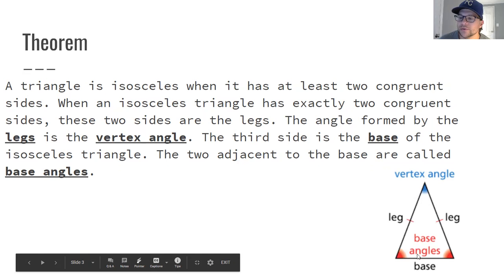And then the two angles that are touching the base are called the base angles. So you have two legs and a vertex angle, two base angles, and a base.